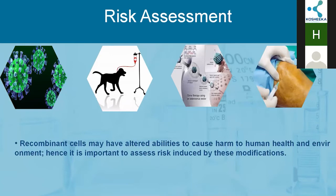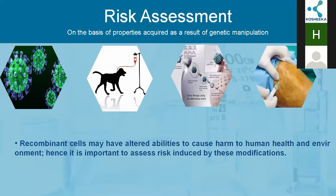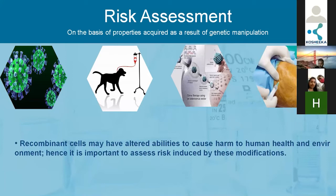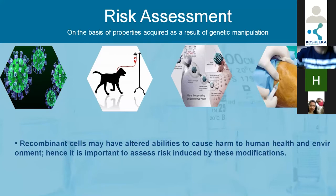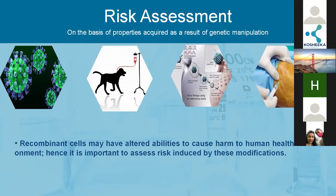The second parameter for risk assessment is based on genetic properties acquired by the cell through genetic manipulation. A classic example is induced pluripotent stem cells (iPSCs), produced by genetic modification of adult somatic cells. Previously it was believed that embryonic stem cells could induce tumorigenic properties in humans, so scientists developed iPSCs to prevent that. However, researchers have also raised concerns over the tumorigenic potential of iPSCs, which is why risk assessment remains important.